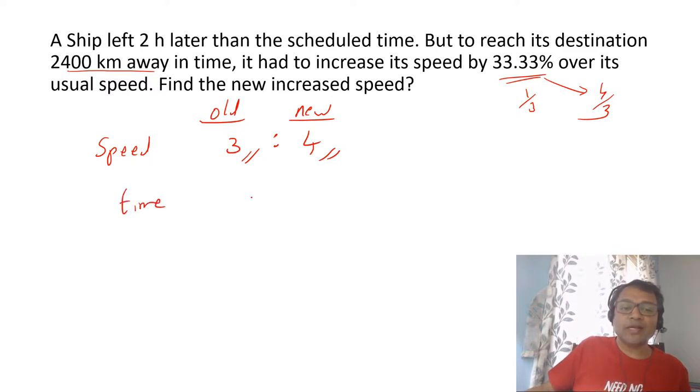So time ratio is 4 is to 3. If the speed ratio is 3 is to 4, more the speed, less the time. Time ratio is 4 is to 3.